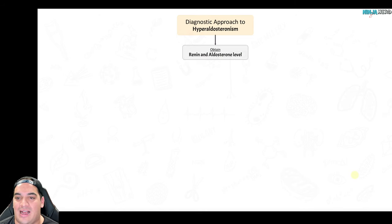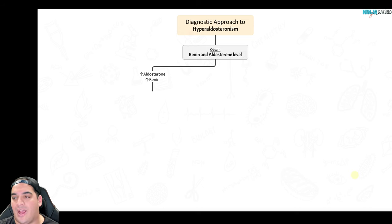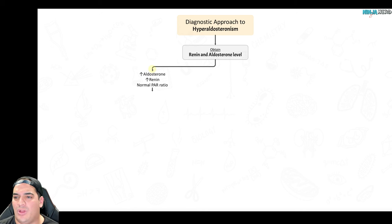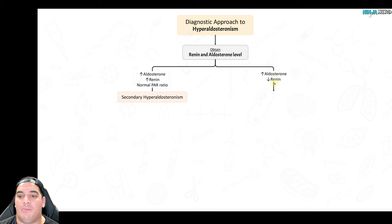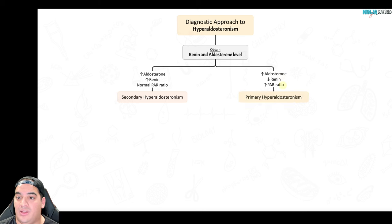Now, how do we diagnose this? You need to determine whether it's primary or secondary. Get an aldosterone level coupled with a renin level and look at the ratio. If aldosterone is high and renin is also high, it's probably a secondary cause, and the plasma aldosterone-to-renin ratio will be relatively normal. If aldosterone is high and renin is low, this strongly suggests primary hyperaldosteronism, with a plasma aldosterone-to-renin ratio usually greater than 20 or 40, which is indicative of primary hyperaldosteronism.